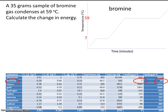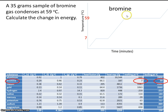Now let's read the problem carefully again. A 35-gram sample of bromine gas — so bromine is a gas — condenses at 59 degrees C. So the bromine is at 59 degrees C; that's the condensing point. It tells us that the bromine starts as a gas, so that means we're starting here at 59 degrees C, going this way, losing heat, and stopping here. This entire problem takes place at 59 degrees C, so that's a plateau.